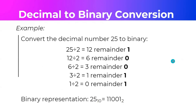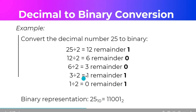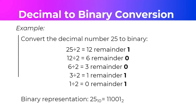Let's say we wanted to get the binary equivalent of the decimal number 25. First, we divide 25 by 2: 25 divided by 2 is 12 remainder 1. Then 12 divided by 2 is 6, no remainder. Then 6 divided by 2 is 3, no remainder. 3 divided by 2 is 1 remainder 1. And then 1 divided by 2 is 0 remainder 1 — this is what we are trying to achieve, a quotient of 0. So reversing the remainders, it's not 1, 0, 0, 1, 1 — we reverse to get 1, 1, 0, 0, 1 base 2.